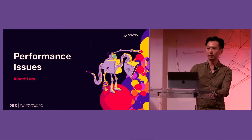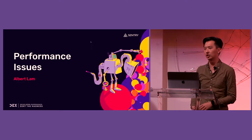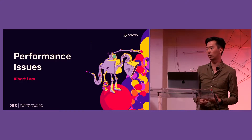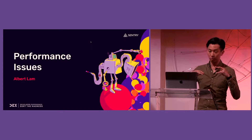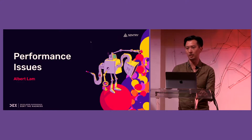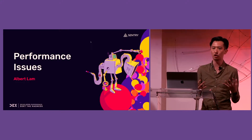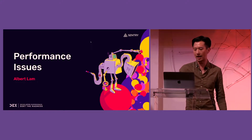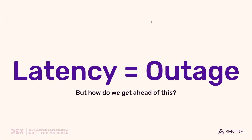In 2020, Sentry launched our performance product that put very powerful visualizations for your performance metrics in one place. Over the last two years, we've built a lot of interesting features such as suspect spans and suspect tags, to try to give you clues as to why your performance is lagging behind. And we understood very early on that latency is pretty much the new outage when you're building software.